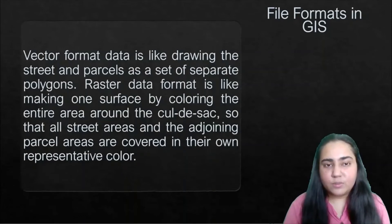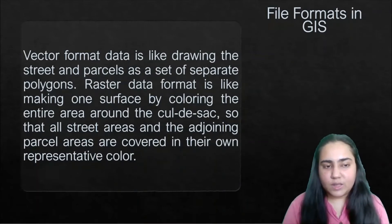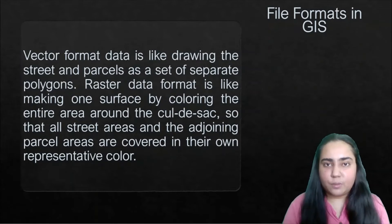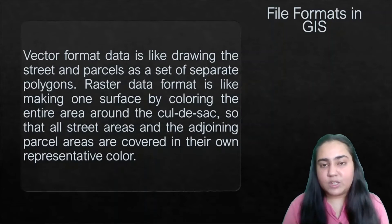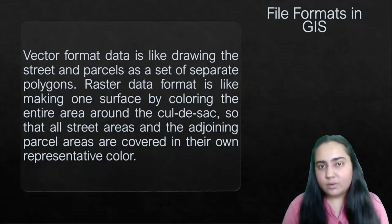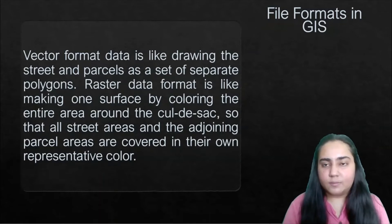Vector format data is like drawing the street and parcels as a set of separate polygons. Raster format is like making one surface by coloring the entire area around the street, so that all street areas and adjoining parcel areas are covered in their own representative colors. You can use different colors for different things — black for the street, other colors for nearby areas — and end up with a multicolored diagram.